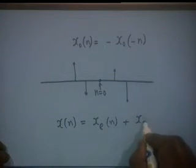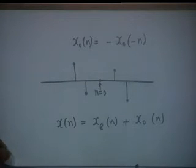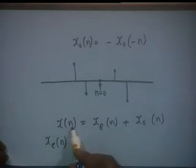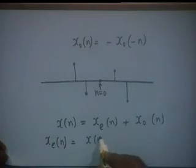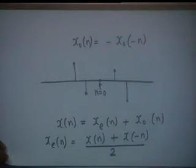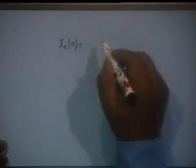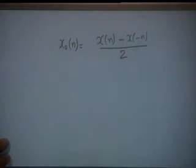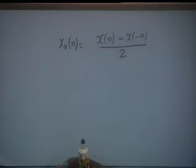A general signal can be decomposed into an even part and an odd part. The even part is Xe(n) = [X(n) + X(−n)] / 2: replace n with −n, add the two, and the odd part cancels. The odd part is Xo(n) = [X(n) − X(−n)] / 2. There are quite a few problems in the textbook on decomposition of signals into even and odd parts — try to work out as many as you can.